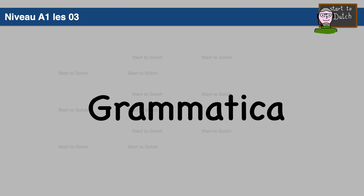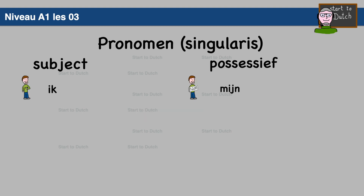Time for some grammar. Today we will learn the pronoun — pronoun singular, pronoun subject, and pronoun possessive. The first person pronoun subject is ik, and the possessive is mijn. For instance: ik ben Jan. Mijn naam is Jan.